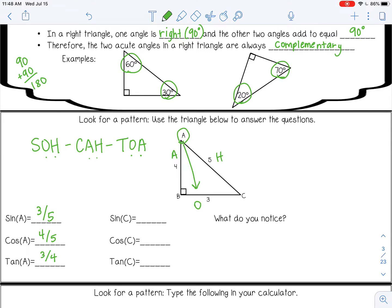Okay, but remember, if I'm looking at a different angle, opposite and adjacent are going to switch. So if I'm looking at angle C, now 4 is opposite, and 3 is adjacent.